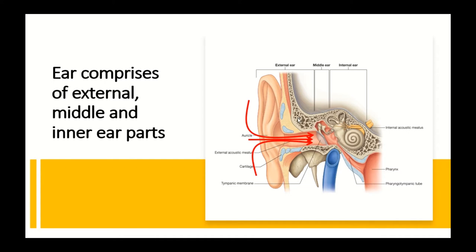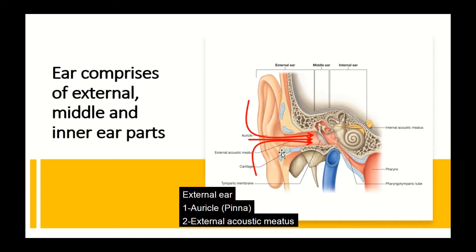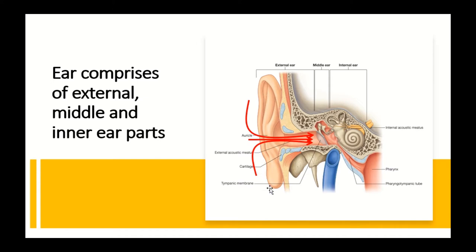Starting with the external ear, we can see that it has a part visible on the outside, which is the auricle or the pinna — a cartilaginous framework covered by skin. The auricle continues inside as the external ear canal or external acoustic meatus, part of which is cartilaginous and part bony. The auricle doesn't serve much function in humans, but in lower mammals the extra-auricular muscles are well developed, allowing the auricle to direct sound waves toward the external ear canal.